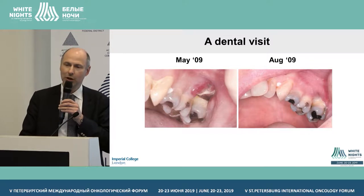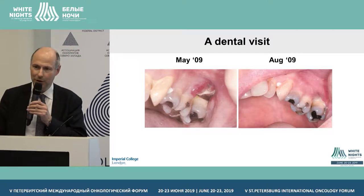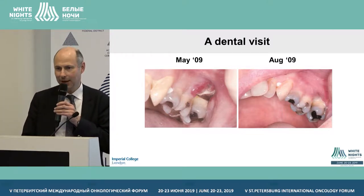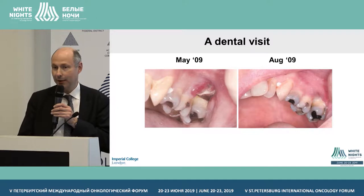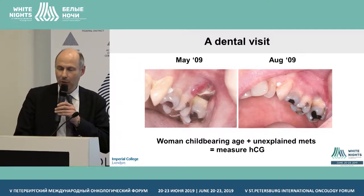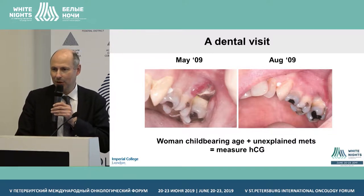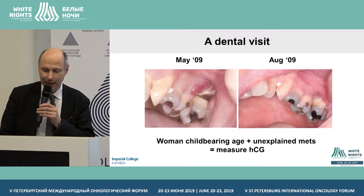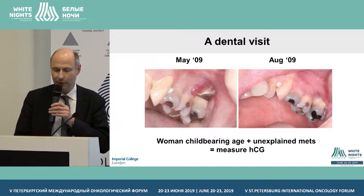To cut a long story short, she had brain metastases, multiple lung metastases, the gum margin metastasis, liver metastases, pancreatic metastases, renal metastases, nothing in the uterus, and a very elevated HCG. With chemotherapy, all was well. The moral of the story is: any woman of childbearing age presenting with unexplained vascular lesions or unexplained metastases - always measure the HCG because you may save her life. The image on the right shows the chemotherapy made that lesion disappear, and indeed all her other disease disappeared.